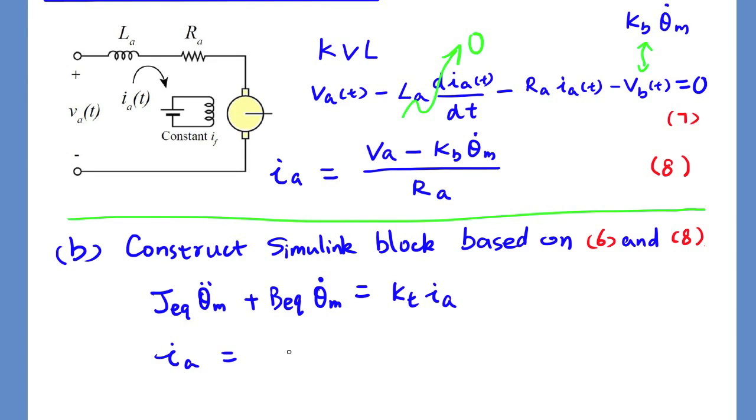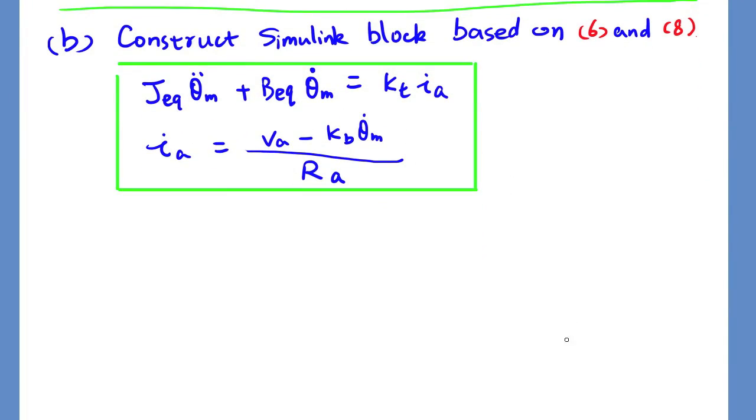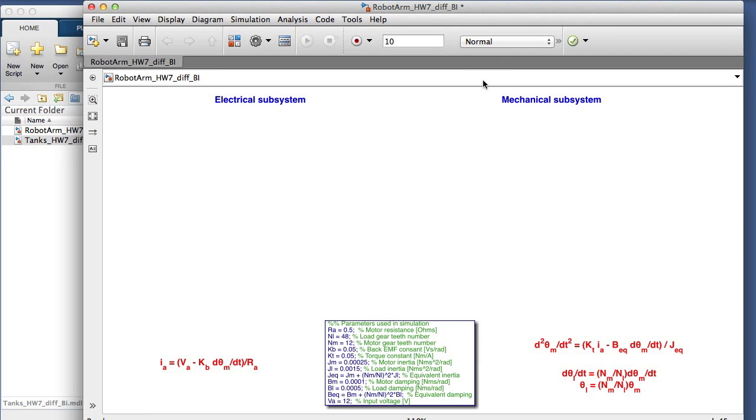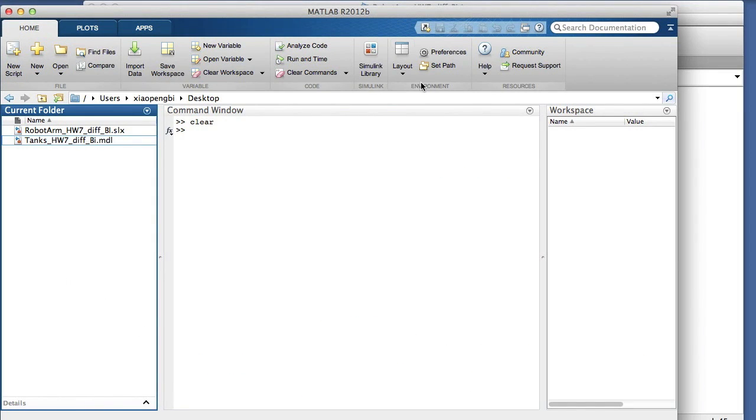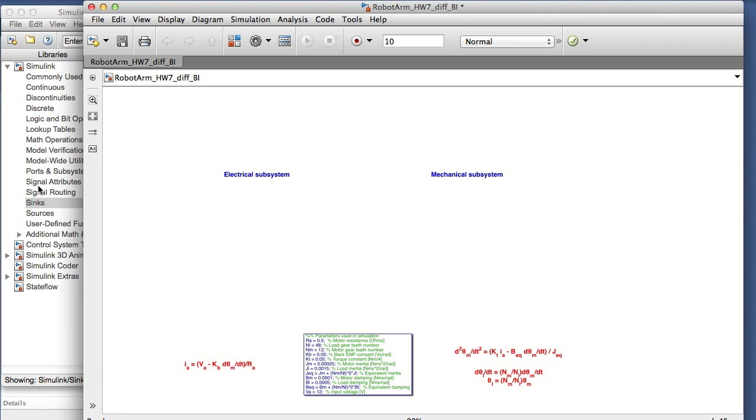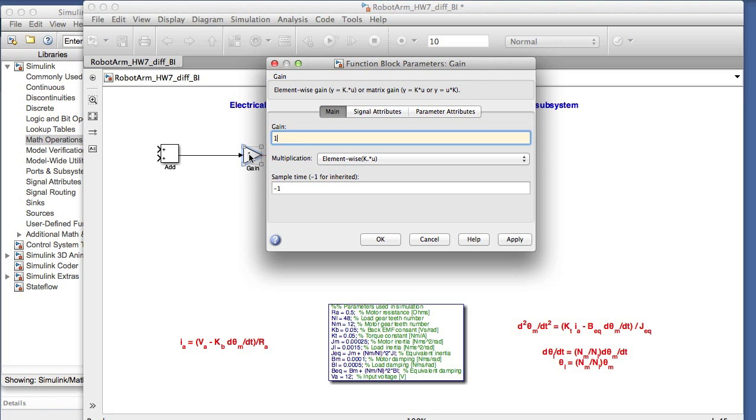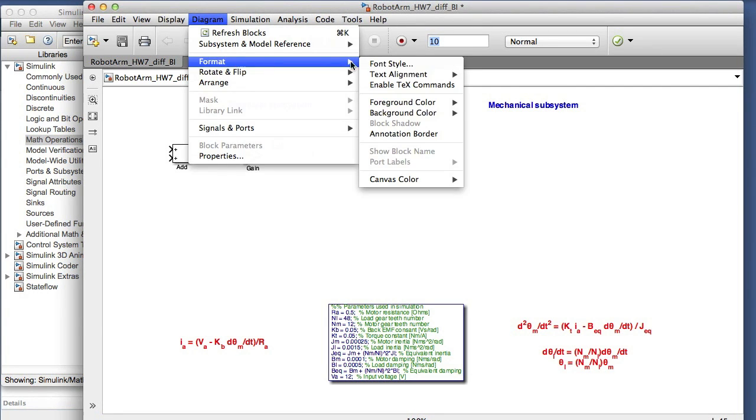Based on these two equations, we can then construct a Simulink block diagram. Here, let me construct the electrical subsystem on the left side of the model, and mechanical subsystem on the right-hand side, based on the equations. For electrical subsystem, we have division and addition operations. Let's go to math operation sub-library, drag in gain and addition blocks.